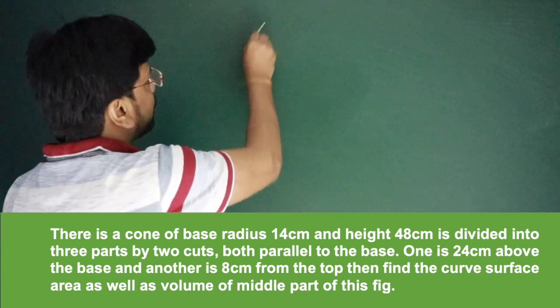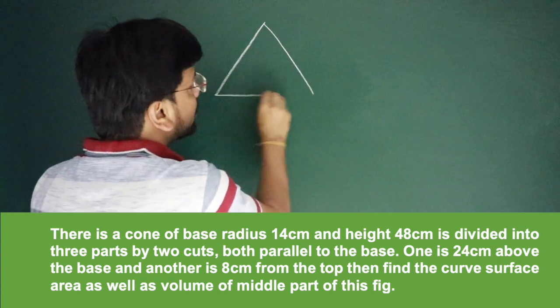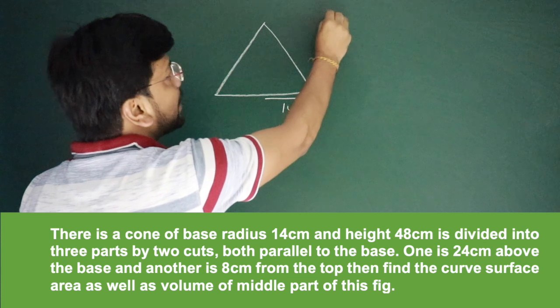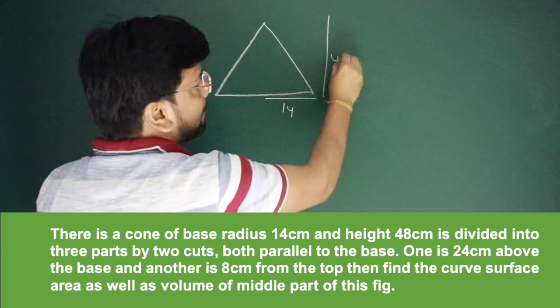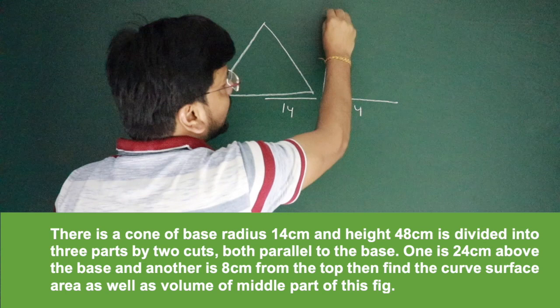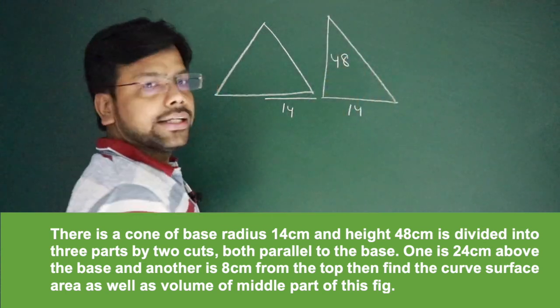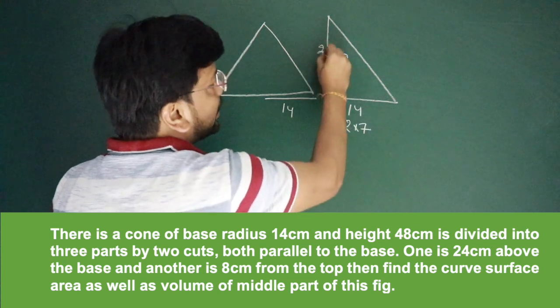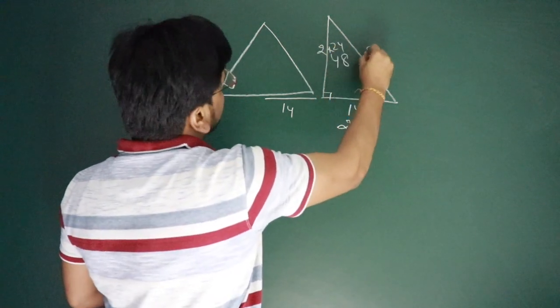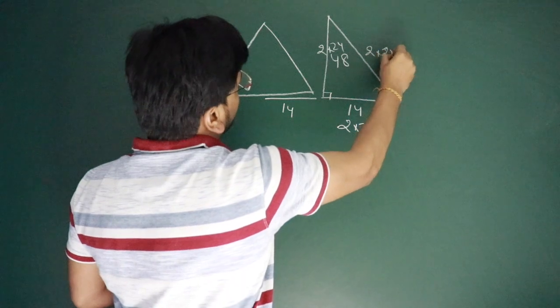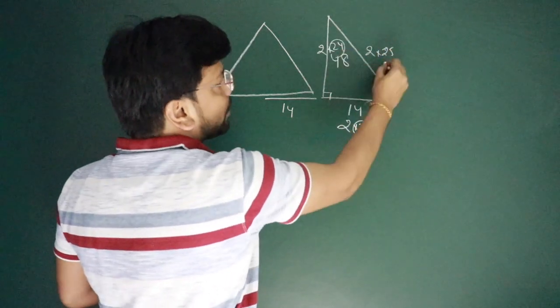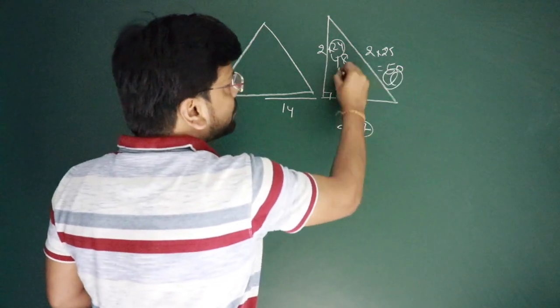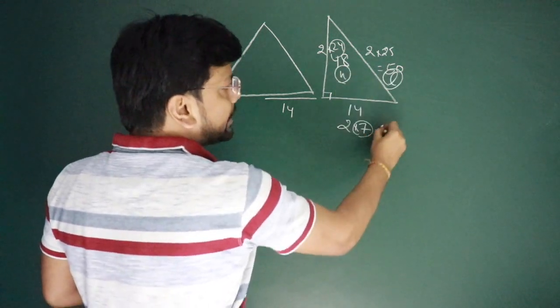Let's draw a cross section of the cone. Suppose this is your cone. The radius is 14 and the height is 48. So if your radius is 14 and height is 48, by Pythagoras theorem we can see 2 into 7, 2 into 24, so obviously 2 into 25. This is the 7, 24, 25 triplet. So the slant height will be 50.